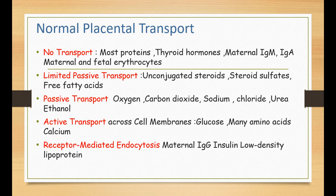Receptor-mediated endocytosis involves the inward budding or invagination of the plasma membrane to pick up and transport substances. Examples include maternal IgG, insulin, and LDL lipoprotein — low-density lipoprotein cholesterol — which is very important for the synthesis of certain hormones in the fetus.